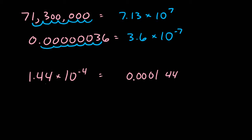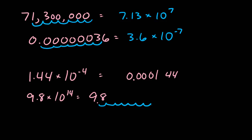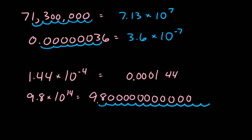Finally, to write the number 9.8 times 10 to the 14th in its standard form, we recognize that this is a really big number since the exponent is positive. We move the decimal a total of 14 places, filling in the spaces with zeros, and we wind up with 980 trillion.